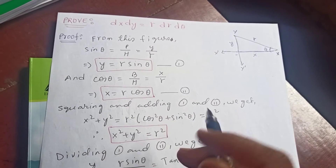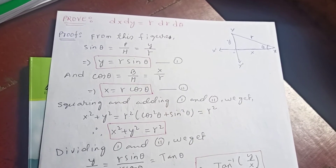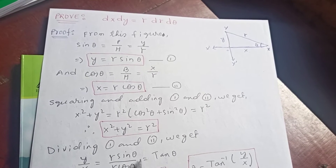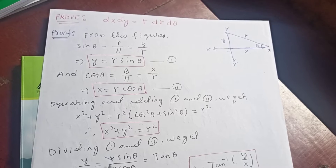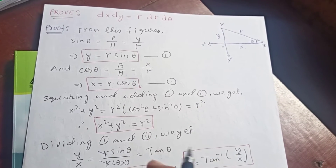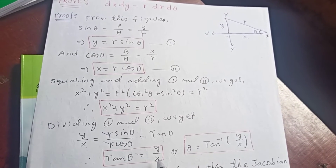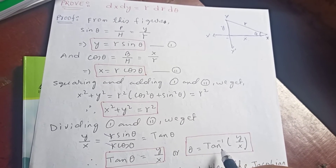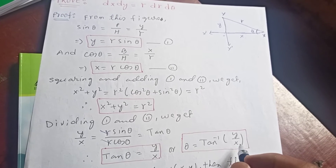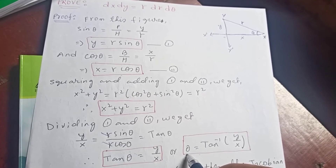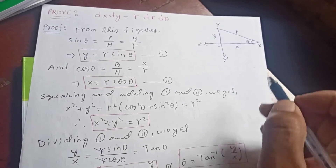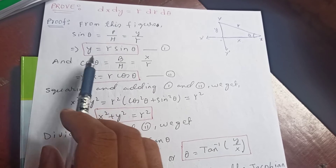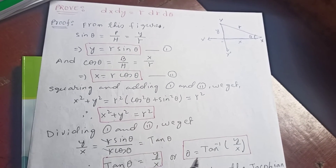Now dividing equation 1 by equation 2, we get y/x = r sinθ / r cosθ. The r cancels, giving sinθ/cosθ, so tanθ = y/x. Therefore θ = arctan(y/x). This is the value for the angle θ. Now these three equations — x = r cosθ, y = r sinθ, and θ = arctan(y/x) — are all very important.